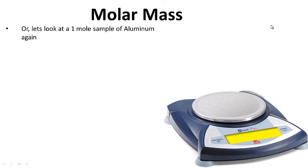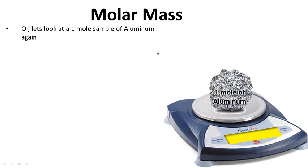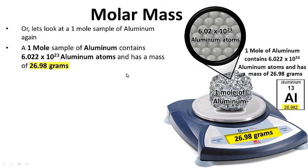Let's look at our one-mole sample of aluminum again. A one-mole sample of aluminum contains 6.02 times 10 to the 23rd aluminum atoms and has a mass of 26.98 grams. Look on your periodic table — that is also the atomic mass of aluminum. So if you have a one-mole sample of aluminum, it will weigh 26.98 grams and will contain 6.02 times 10 to the 23rd aluminum atoms.